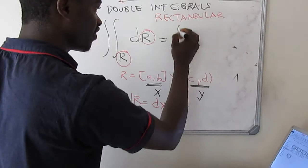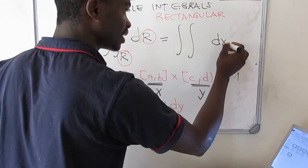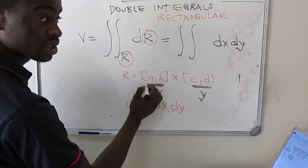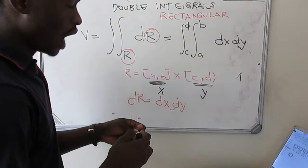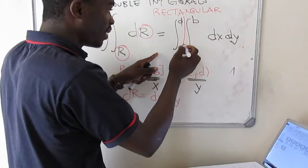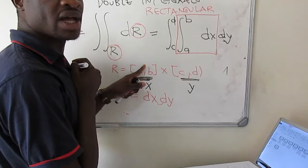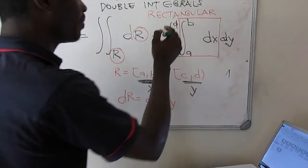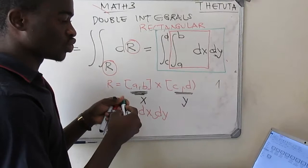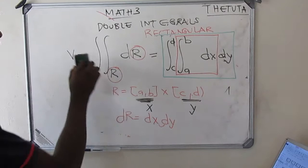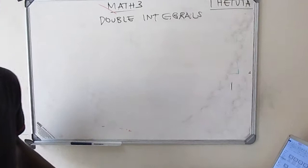When they give us something in double integral form, we change it: the integral from d to c from b to a of the function dx dy — where [a, b] are the limits of x and [c, d] are the limits of y. To solve a double integration, you start with the inner part first. Once you are done solving the inner part, you come and solve the outer part. The inner integral is according to x, and the outer integral is according to y.